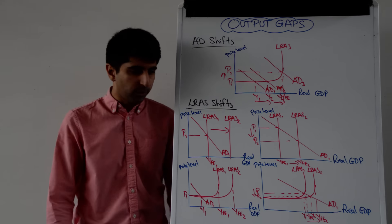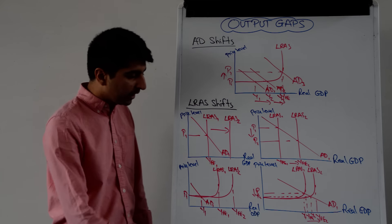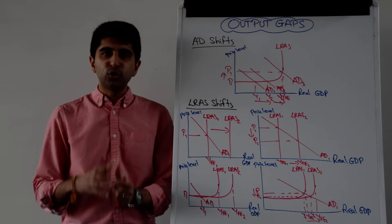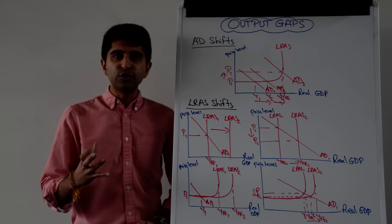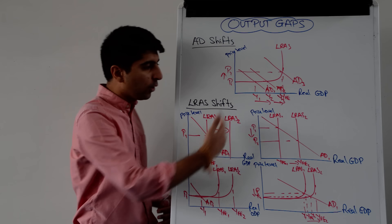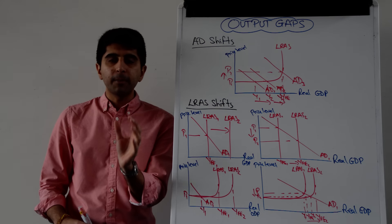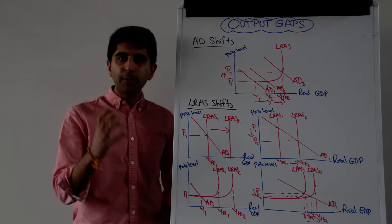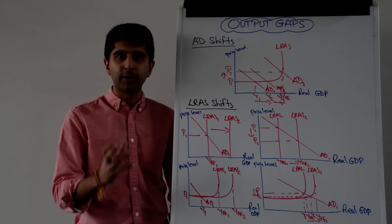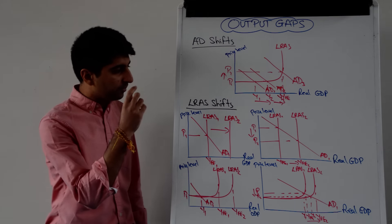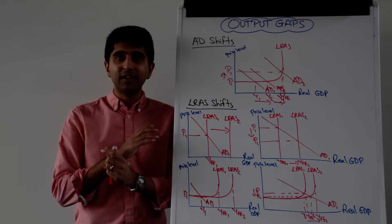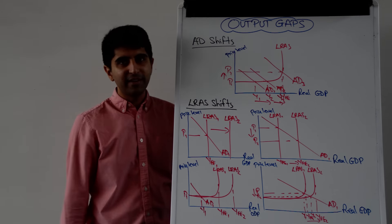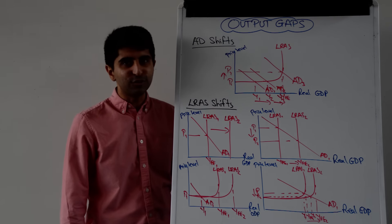Demand side policies are the only way in which the economy can grow. This is how you can use output gaps to evaluate the key conclusions we come to whenever we shift AD or LRAS. Whenever we talk about the impacts on macroeconomic performance, output gaps are always a fantastic evaluation tool. Hopefully now you can really nail the essays when you use output gaps. I will catch you all in the next video — thank you so much for watching.